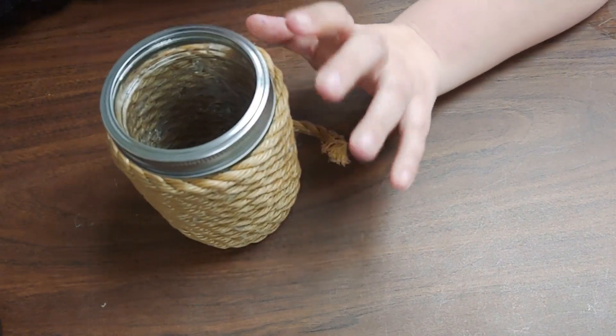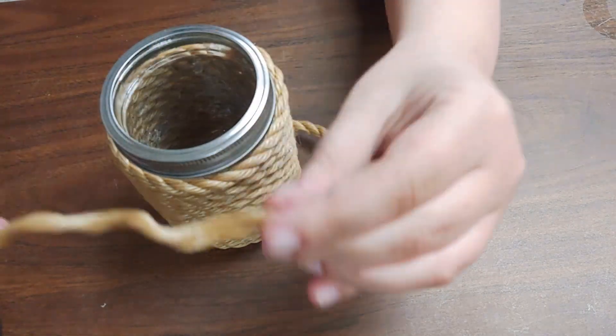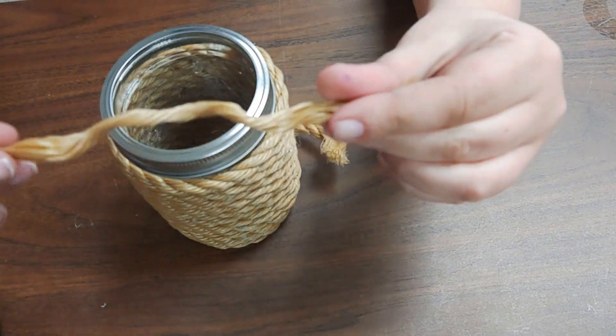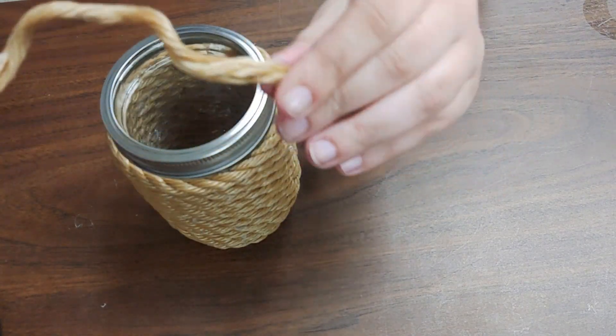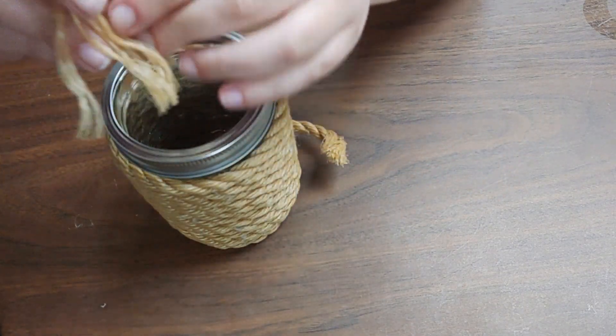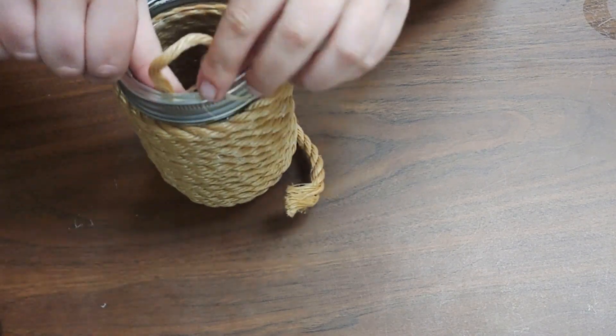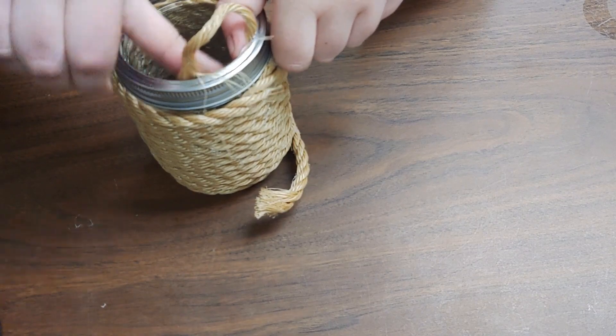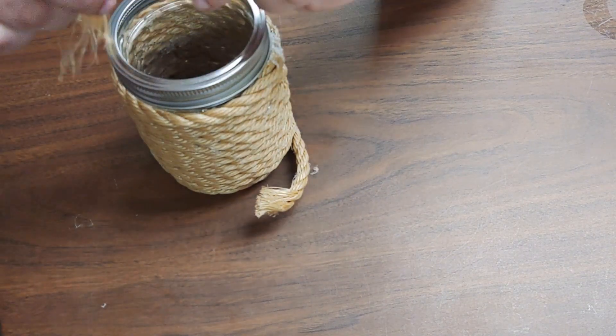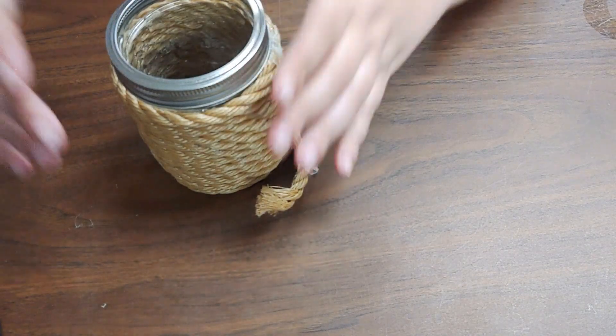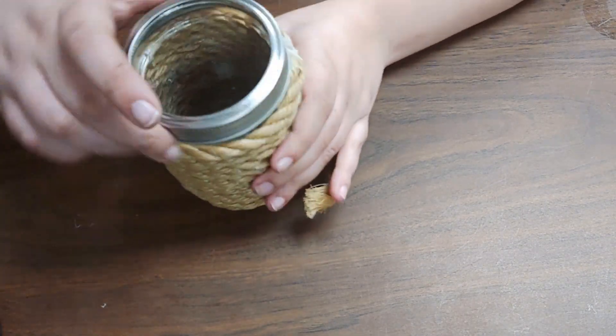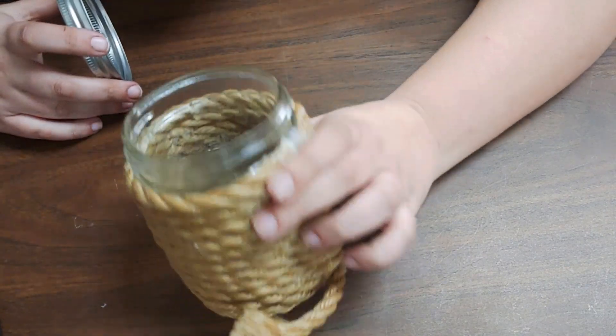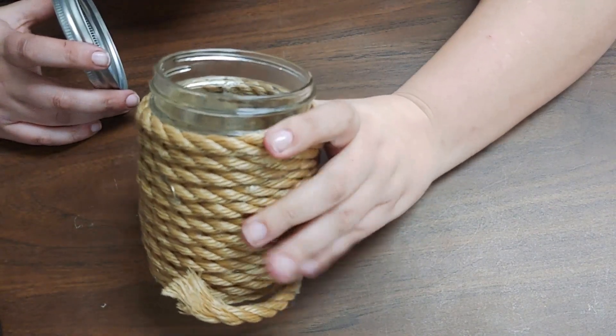Another thing I considered that you could do is—this is how much rope I had left at the end. What I did is I unraveled it, so this is one strand of the three. And you could just glue it on the inside of the jar to create two ears. I did put the lid back on because I like the silver, but you could totally display it like this as well.